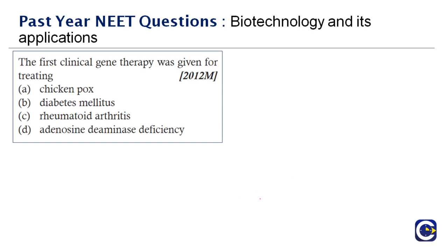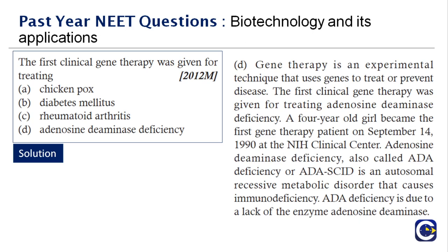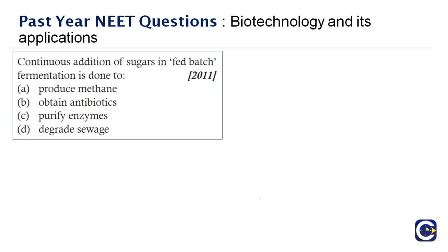Next question: the first clinical gene therapy was given for treating — options include chickenpox, diabetes, rheumatoid arthritis, and adenosine deaminase deficiency. Gene therapy is an experimental technique that uses genes to treat or prevent disease. The first clinical gene therapy treated adenosine deaminase (ADA) deficiency — a four-year-old girl was the first gene therapy patient on September 14, 1990, at the NIH Clinical Center. ADA deficiency is an autosomal recessive metabolic disorder causing immunodeficiency. The right answer is option D.